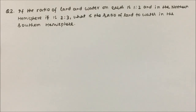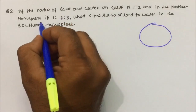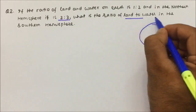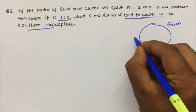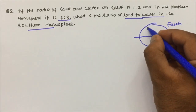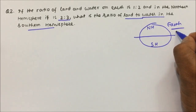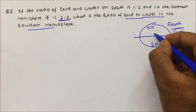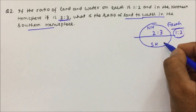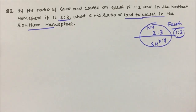Question number 2: If the ratio of land and water on earth is 1 is to 2 and in the northern hemisphere it is 2 is to 3, what is the ratio of land to water in the southern hemisphere? The earth is divided into two parts — northern hemisphere and southern hemisphere. In the northern hemisphere, land and water is in the ratio 2 is to 3, and we need to find the ratio of land and water in the southern hemisphere.